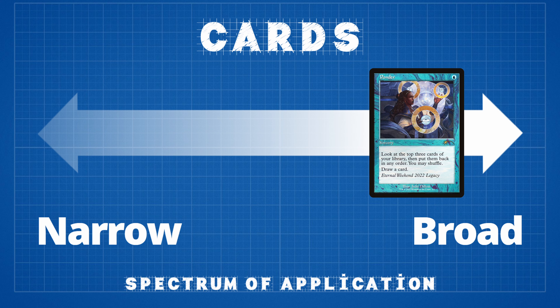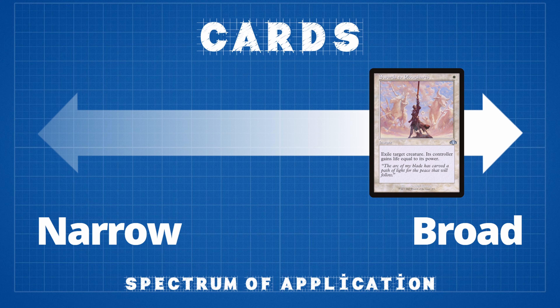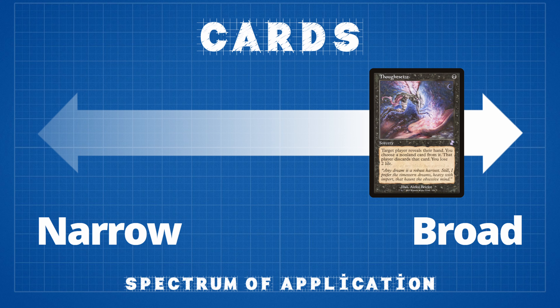Ponder will likely be played in many different types of decks. Other examples of cards with broad applicability would be Lightning Bolt, Swords to Plowshares, or Thoughtseize in some of the other colors. These broadly applicable cards can be slotted into almost any archetype; however, because of this broadness, these cards alone are not going to pull a drafter into any specific archetype.